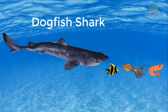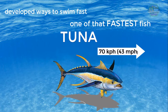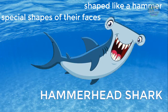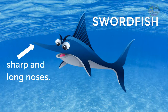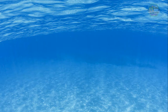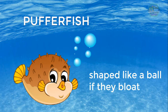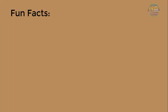Some species of fish have developed ways to swim fast. The tuna is one of the fastest fish — it can swim up to 70 kilometers per hour. Other fish have special face shapes, like the hammerhead shark that is shaped like a hammer, or the swordfish that has a very sharp and long nose. Puffer fish are shaped like a ball when they bloat.